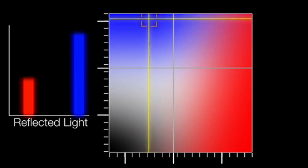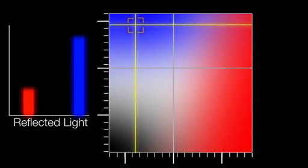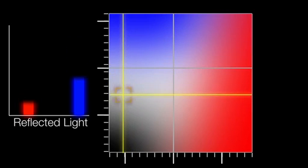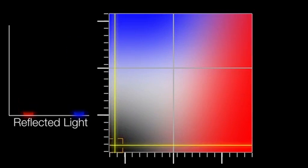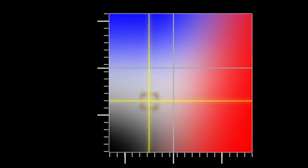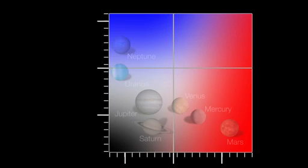The more blue light it reflects, the higher it goes. And if the planet reflects relatively little blue and red light, it falls in the dark section. But in this way, here's where the planets lie.